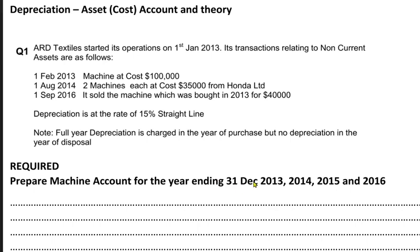We need to make it for all of the years. Therefore, one combined account would be made for all of the years — that is 2013, 14, 15, and 16. Now let me read the question for you. ARD Textile started operations on 1st January. This means it is a new business and we have just started the business on January 2013, so we do not have any assets prior to 1st January. Because we have just started the business, there is no balance brought down.